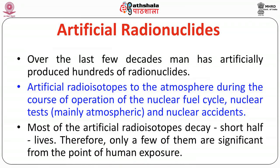Artificial radionuclides: over the last few decades, man has artificially produced hundreds of radionuclides for various purposes — in medicine, industry, research, and agriculture. These artificial radioisotopes are released to the atmosphere during nuclear fuel cycle operations, nuclear tests and nuclear accidents. Most artificial radioisotopes decay with short half-lives; therefore, only a few of them are significant from the point of view of human exposure.